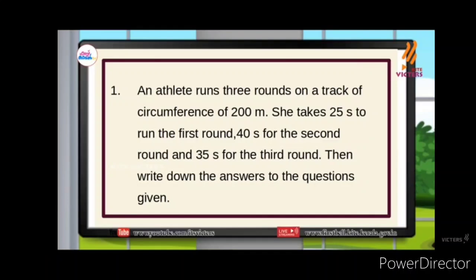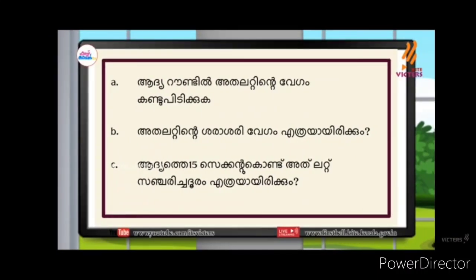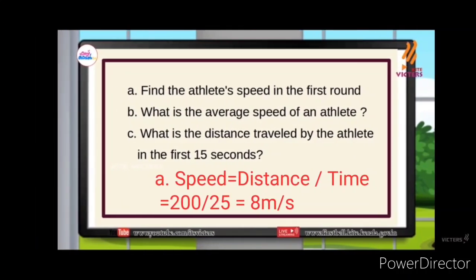An athlete runs 3 rounds on a track of circumference 200m. She takes 25 seconds to run the first round, 40 seconds for the second round, and 35 for the third round. Then write down the answers to the questions given below. You can see 200m on a track of circumference 200m. Speed equals distance by time equals 200 by 25 equals 8 m per second.